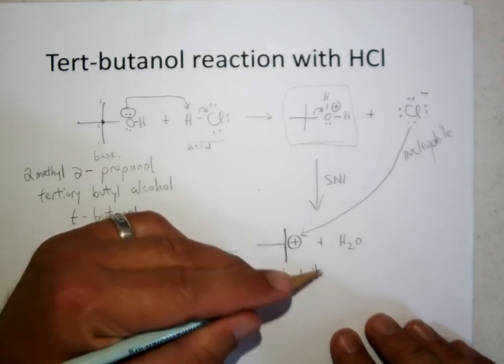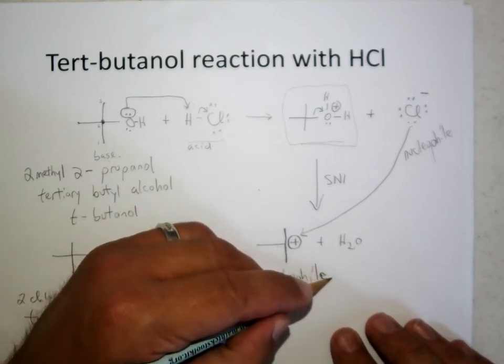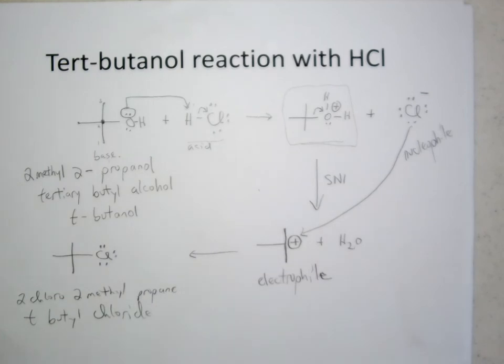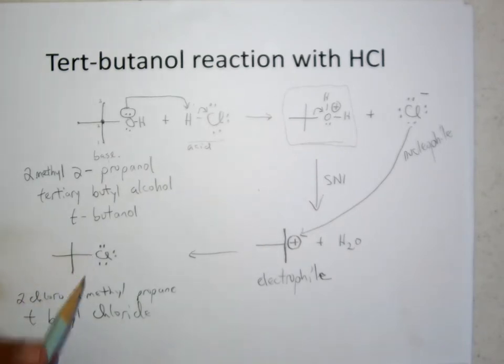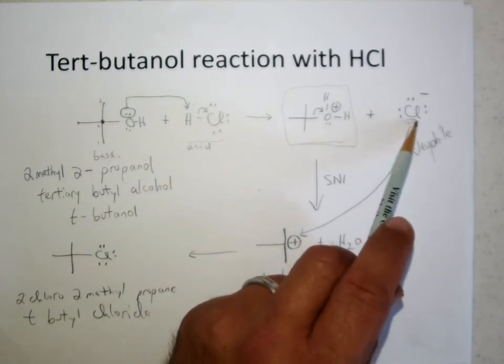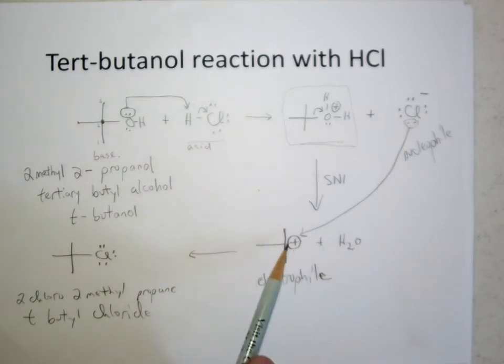So again, we've seen this language before. Nucleophiles are looking for positive charge. Electrophiles are looking for negative charge, and if they find each other, they often form a nice bond. And so the carbon-chlorine bond is formed when the lone pair on the chloride nucleophile finds the bare carbocation and can form a bond.